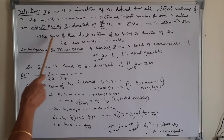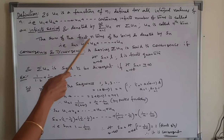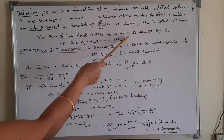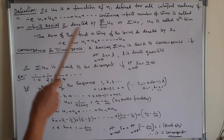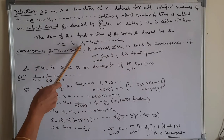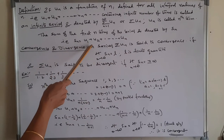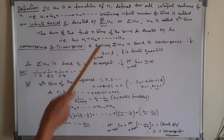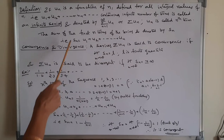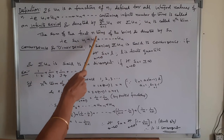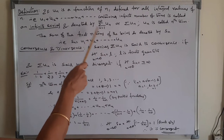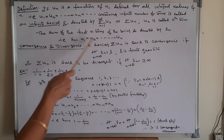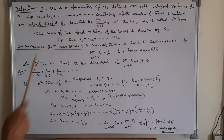Next, the sum of the first n terms of the series is denoted by Sn. That is Sn equals U1 plus U2 plus so on plus un. We take the sum of the first n terms to solve problems — that is why we use Sn.